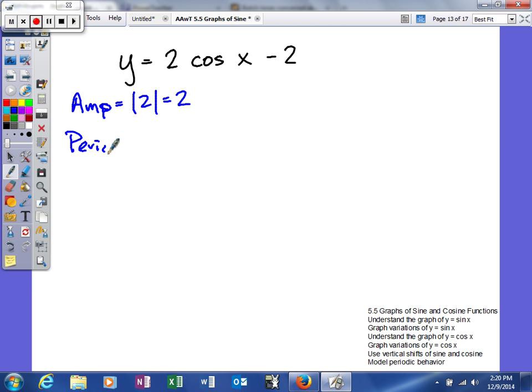Period: 2π divided by B, which is x's coefficient, which is 1, so we get 2π. Phase shift: you're going to put whatever you're taking the sine or cosine of, which in this case is x. We need to solve for x. You can define your divisions by doing your period divided by 4, which would be π/2.